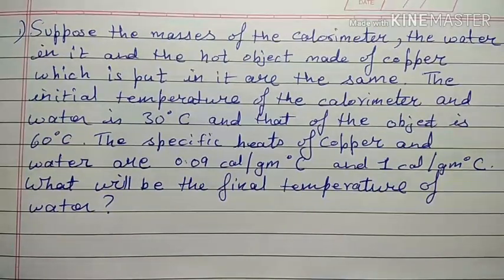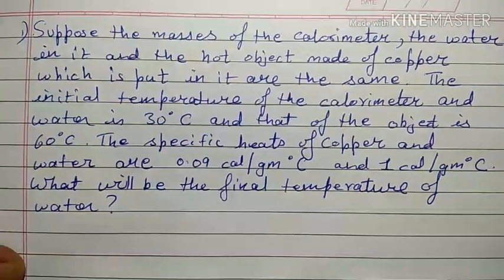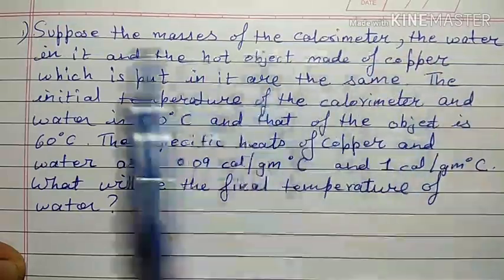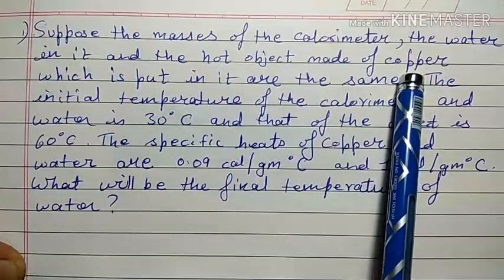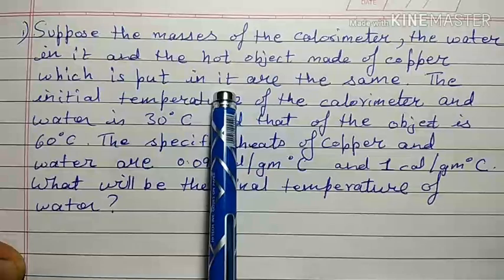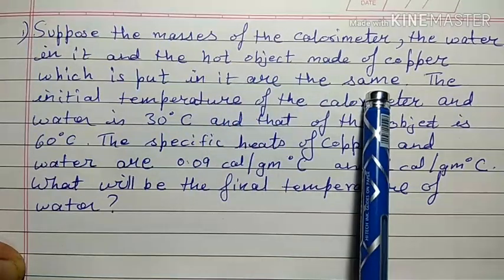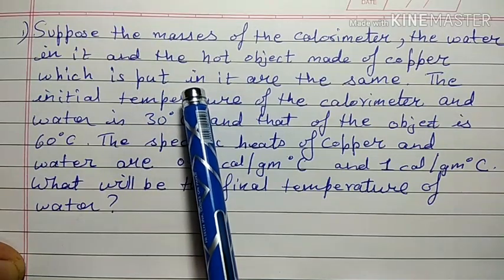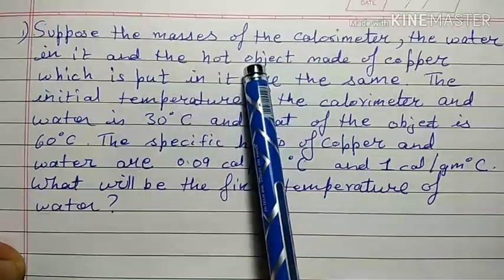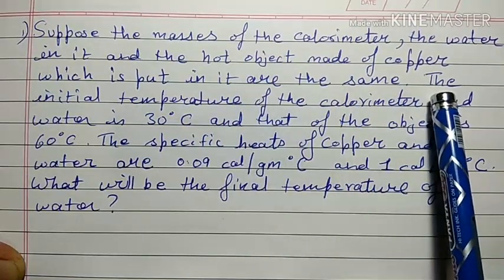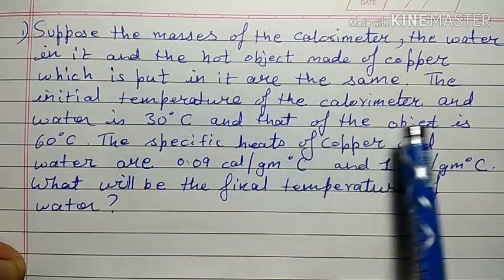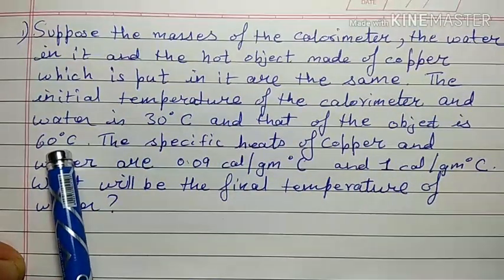In this video we'll go through all the sums related to heat and specific heat. The first one: suppose the masses of the calorimeter, the water in it, and the hot object made of copper which is put in it are the same. The initial temperature of the calorimeter and water is 30°C and that of the object is 60°C.